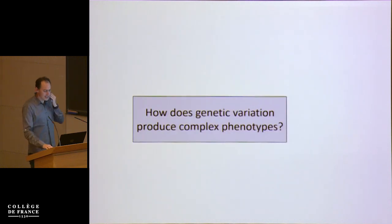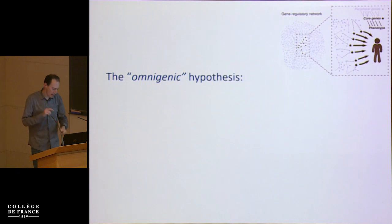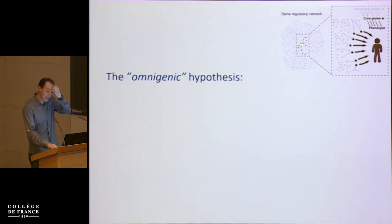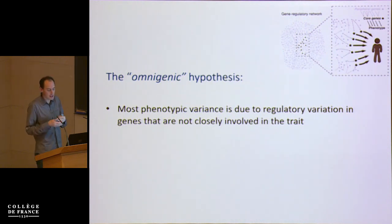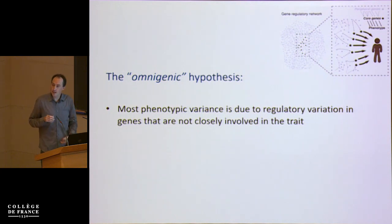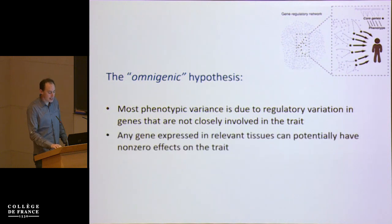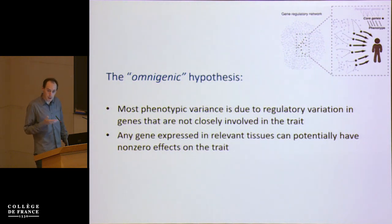The goal now is to think about models that might explain these kinds of data. In the second half of the talk, I'll tell you about the model we've been working on, which we refer to as the omnigenic hypothesis. We suggest that most of the phenotypic variance is driven by regulatory variation in genes that are not proximately involved in the trait in question.